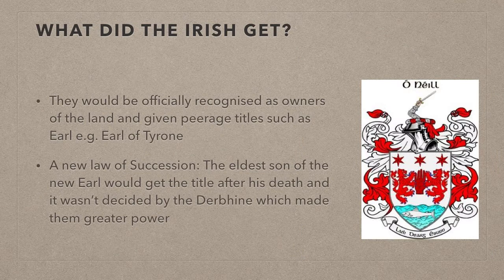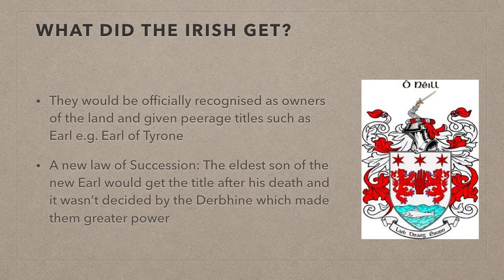In return, Henry would allow them to be official tenants on the land, recognised within English law, and be given English peerage titles — for example, the Gaelic leader of the O'Neills in Tyrone became the Earl of Tyrone. This policy was very popular with the Gaelic Irish, as under English law they tightened their control on power: now the eldest son of the Gaelic Lord would automatically become Lord after his father died, rather than being decided by the derbfhine as we looked at in the last video, and it would give the head of the clan more land.